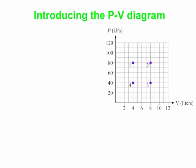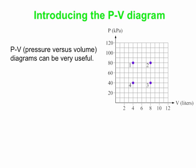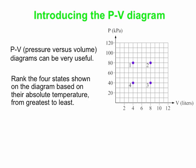Here we have a PV diagram. We have pressure on the vertical axis, in units of kilopascals. We have volume on the horizontal axis in units of liters. We have four states marked on the PV diagram here. I'm going to claim that PV diagrams can be very useful. You can use the information on the graph to rank the four states based on temperature, from greatest to least.